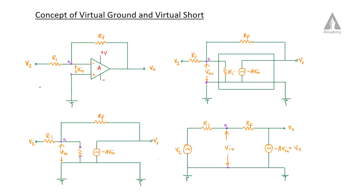In the inverting feedback amplifier in the parallel configuration, we have input voltage V2 which is connected to the inverting terminal. The output voltage V0 is fed back to the input terminal through the RF resistor. The non-inverting terminal is grounded.